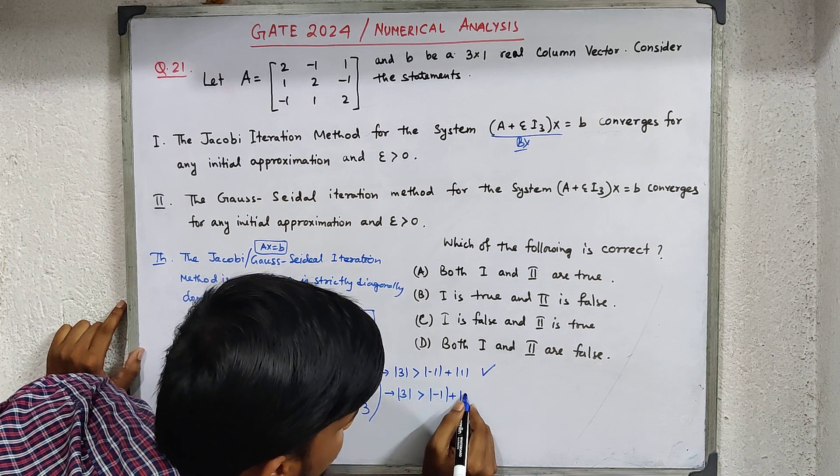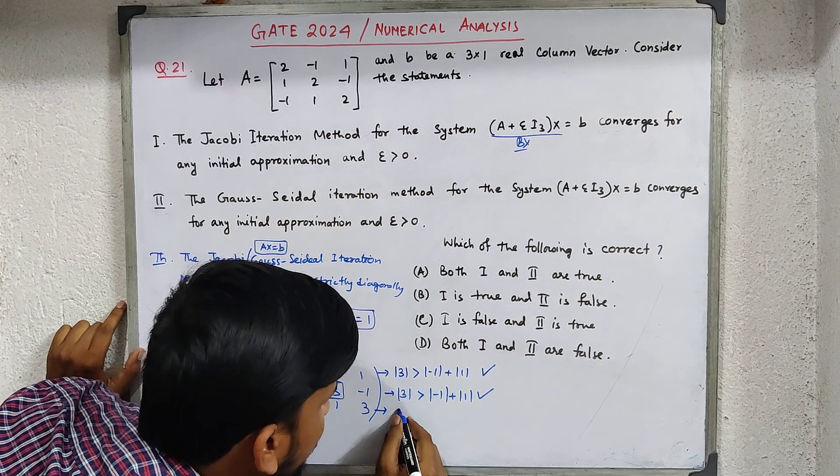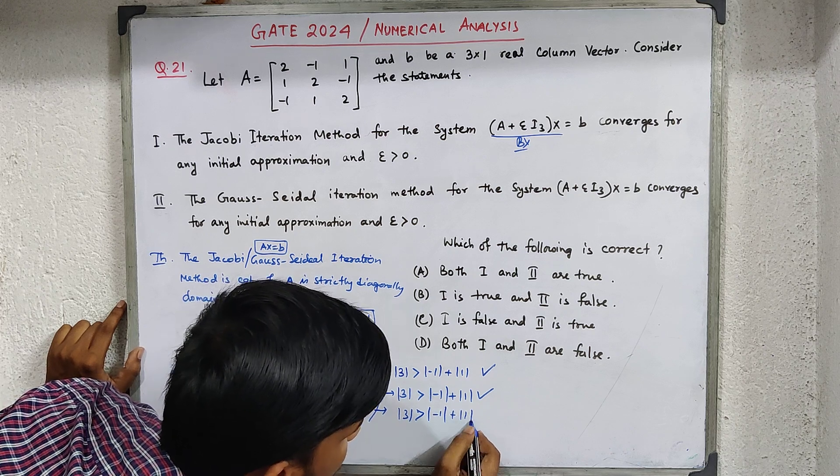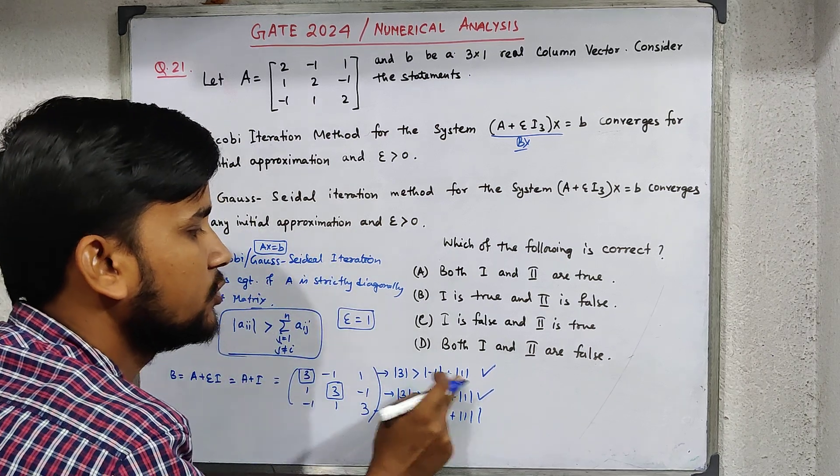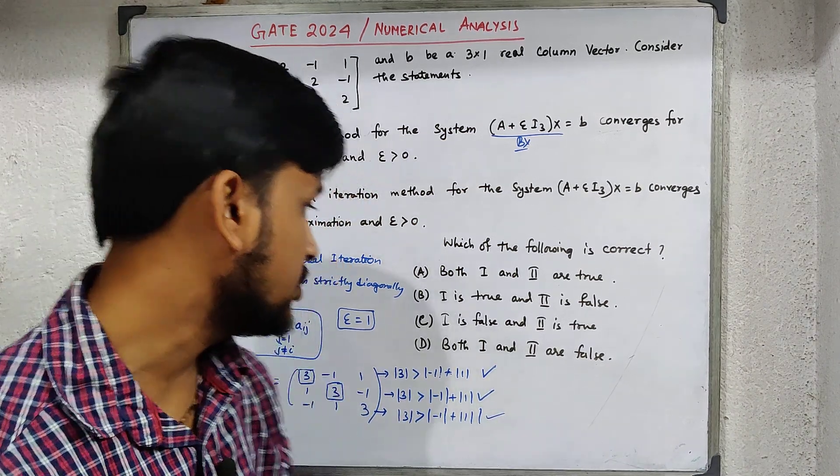For the third row, |3| is greater than |-1|+|1|. Yes, because these are 2, 2, 2, and the diagonal elements are 3, 3, 3. Therefore 3>2, yes this is true.